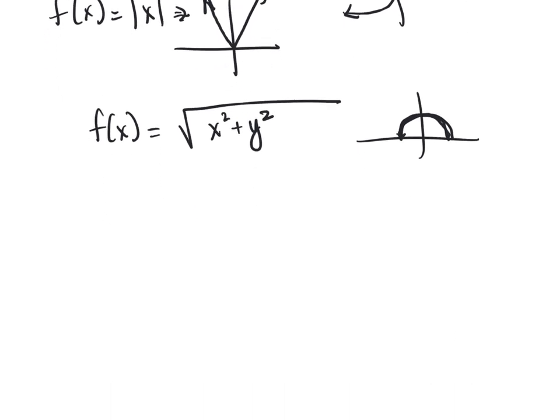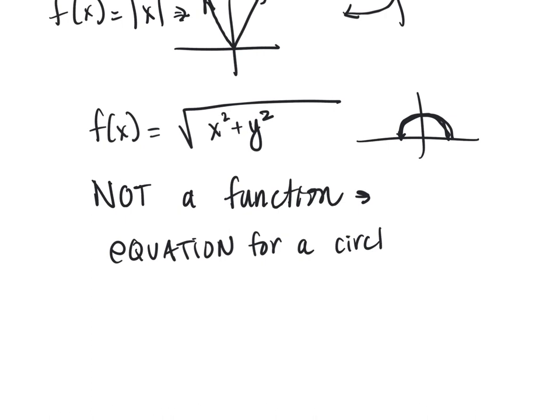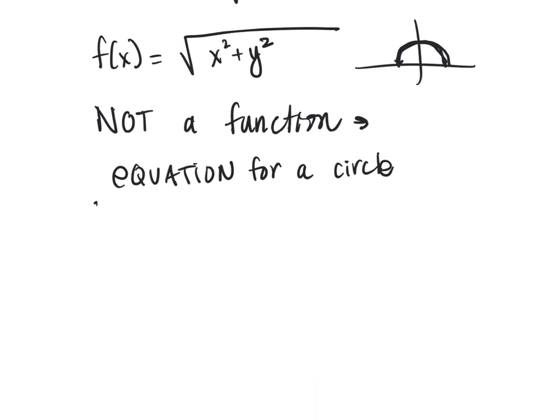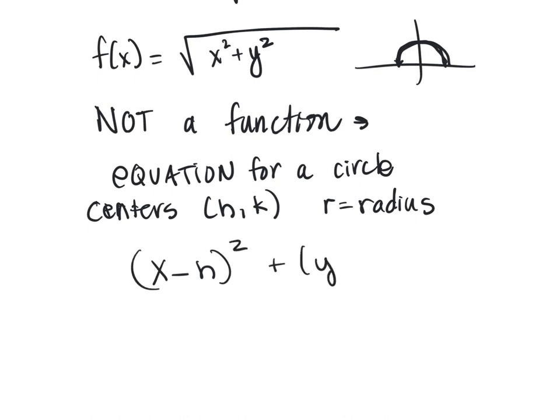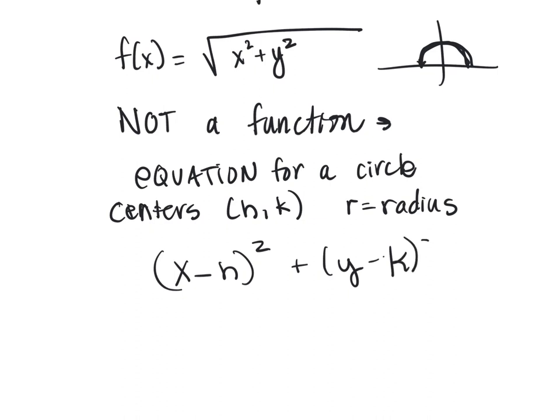They put it in here so in this book, not a function but kind of an equation relation that you want to be familiar with is the equation for a circle. And if you have a center at (h,k), if the circle centers and has a radius of r, then your equation is going to be (x minus h) squared plus (y minus k) squared equals r squared.